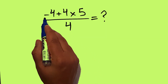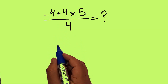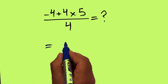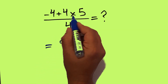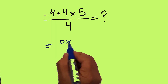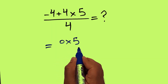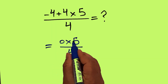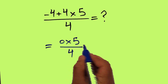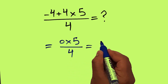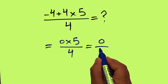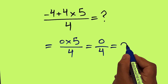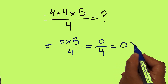Negative 4 plus 4 gives us 0. And 0 times 5 over 4 — 0 times any number gives us just 0. And 0 divided by 4 equals 0. But this answer is not correct.